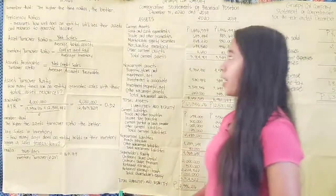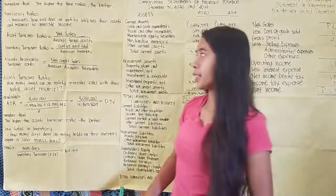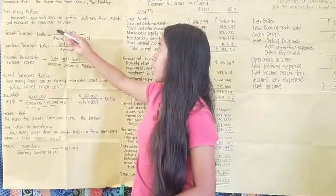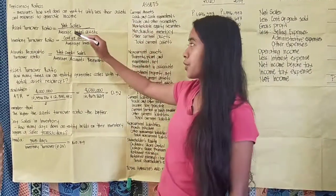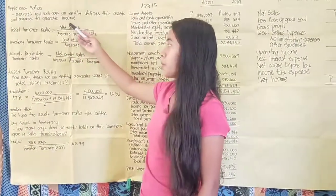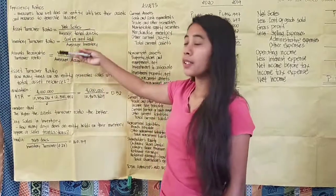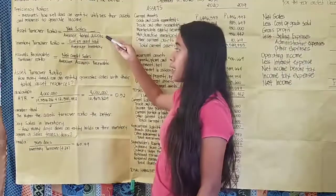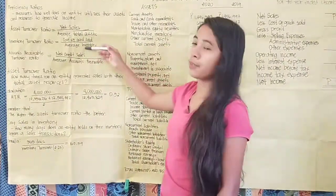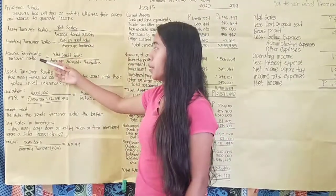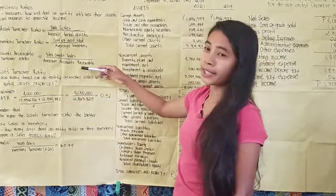Remember that the higher the times interest earned ratio, the better. Moving on to efficiency ratios, which measure how well an entity utilizes its assets and resources to generate income. The formulas are: asset turnover ratio equals net sales over average total assets; inventory turnover ratio equals cost of goods sold over average inventory; and accounts receivable turnover ratio equals net credit sales over average accounts receivable.